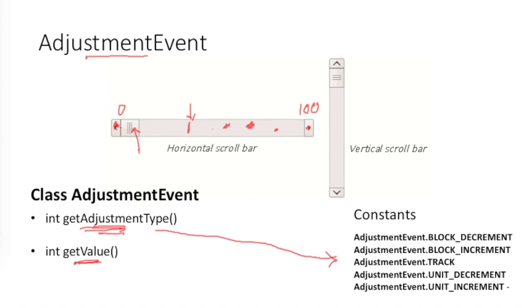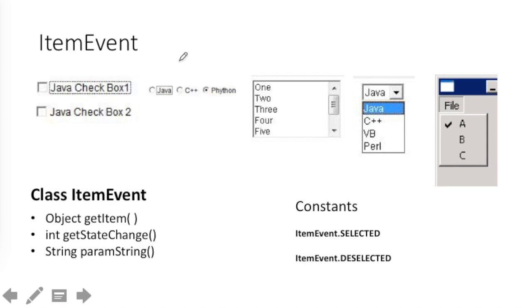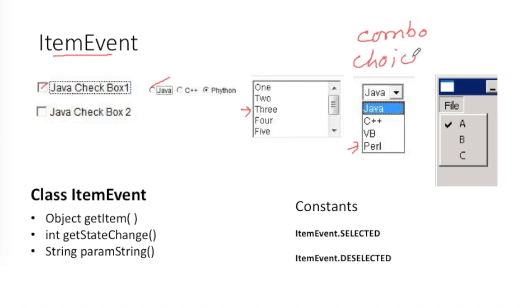Next is ItemEvent, which is generated in the following cases: clicking on a checkbox, clicking on a radio button, selecting an item in a list box, selecting an item in a drop-down box (called a combo box or Choice in Java), or selecting a checkable menu item. There is a built-in ItemEvent class, and one of its methods is paramString(), which returns the label of the checkbox or menu item.